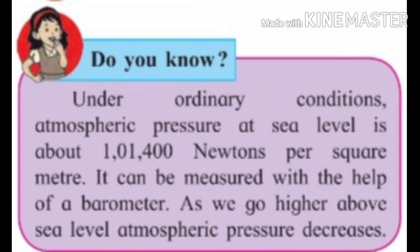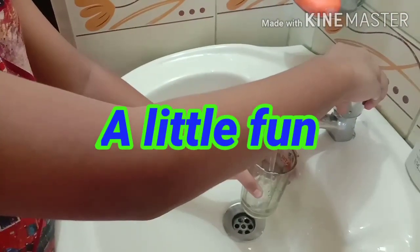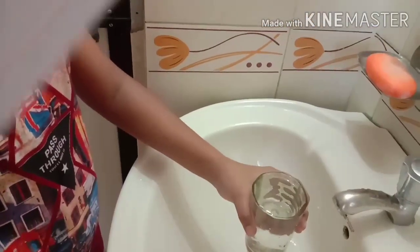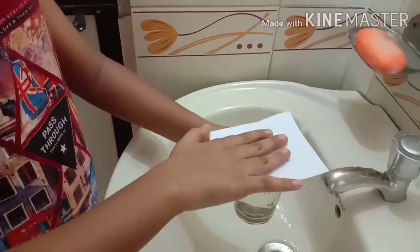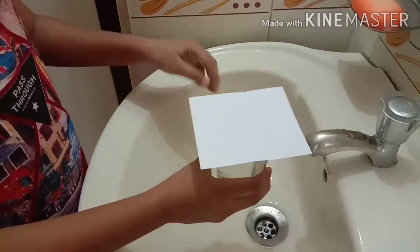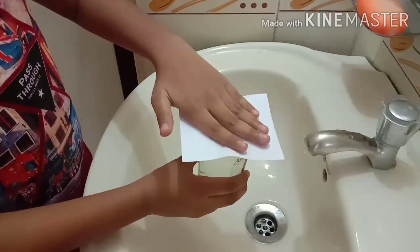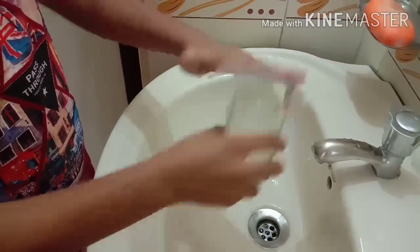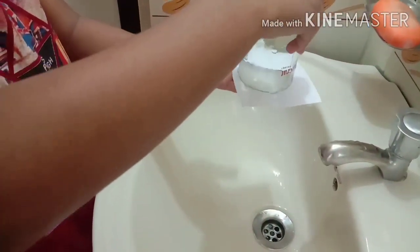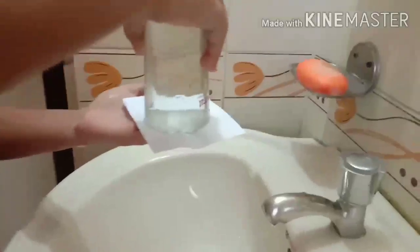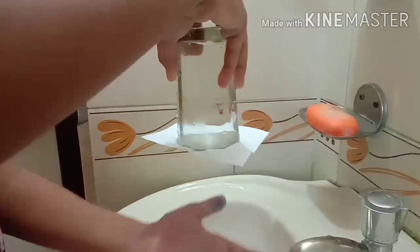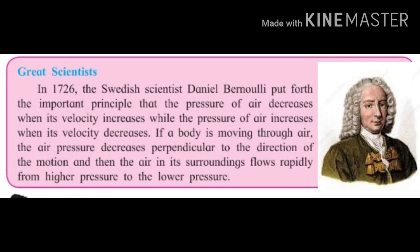Fun activity: place a piece of cardboard on the mouth of a glass filled completely with water. Holding the cardboard firmly in place with one hand, invert the glass quickly, then take your hand away from the cardboard. What do you see? In 1726, the Swedish scientist Daniel Bernoulli put forth the important principle related to air pressure.